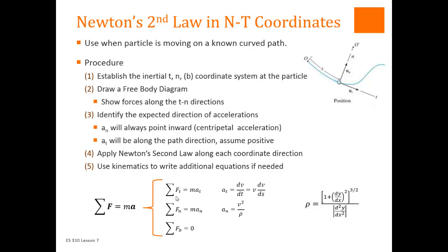Newton's second law in the normal-tangential direction: the sum of forces in the tangential direction equals mass times the tangential acceleration. From Lesson 4, the tangential acceleration is simply v-dot, or the derivative of velocity. Similarly, in the normal direction, the acceleration is v² over rho. Rho is the radius of curvature. If we're given the path as y as a function of x, we'll need to take derivatives to find rho. For the third direction, the b direction — perpendicular to t and n — the sum of forces in that direction is always equal to zero.